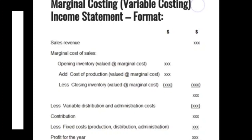Marginal costing and variable costing are the same. The format is: Sales Revenue, minus marginal cost of sales — which includes opening inventory at variable cost, plus cost of production at variable cost only, minus closing inventory at variable cost — giving cost of sales at variable cost. Then deduct all variable distribution and administration expenses to get contribution. Deduct all fixed costs to get profit for the year.